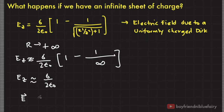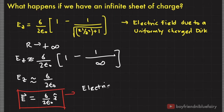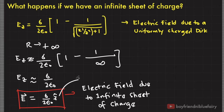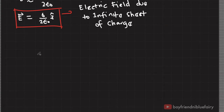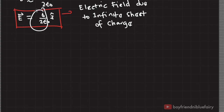In vector form, the electric field due to an infinite sheet of charge is E = σ/(2ε₀) ẑ, where ẑ is the direction perpendicular to the surface. This is a remarkable result: the electric field due to an infinite sheet of charge does not depend on z, meaning it does not depend on the distance from the surface. The field is fixed and constant no matter where point P is located.